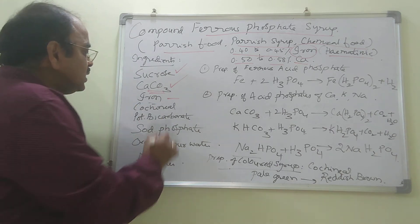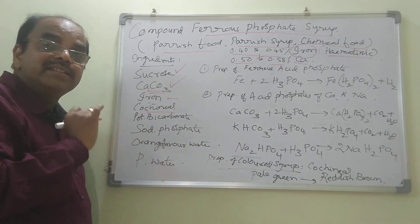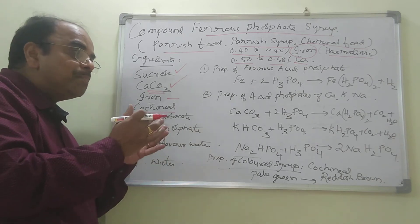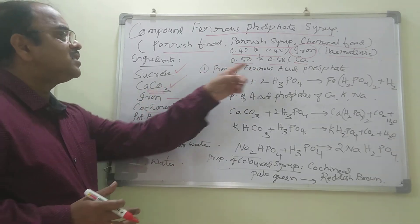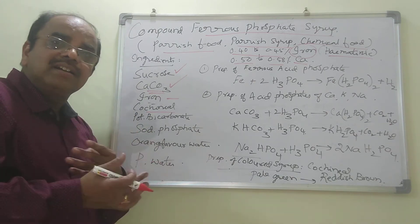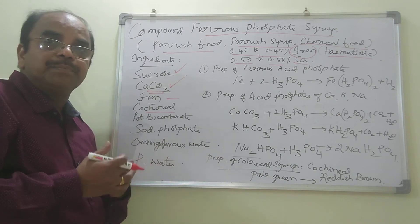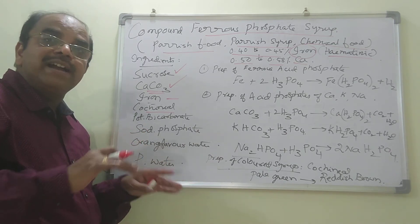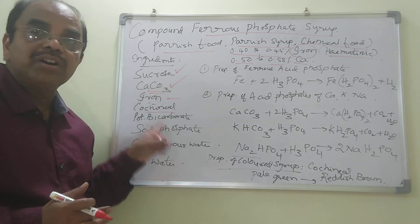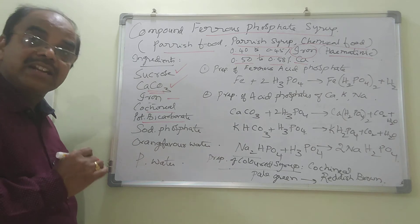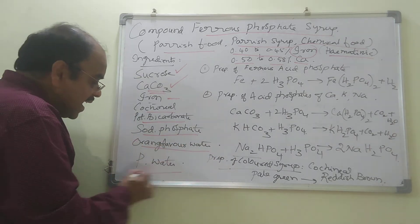This preparation is used for hematinic purposes — to increase iron levels in the body. We can use it as a calcium source also. This preparation contains 0.40 to 0.45% of iron and 0.50 to 0.58% of calcium. The ingredients include iron, cochineal as a coloring agent — used to mask the change of color in the preparation. There is a possibility for oxidation of ferrous to ferric forms causing color change. Other ingredients include potassium bicarbonate, calcium carbonate, sodium phosphate, orange flower water as the flavoring agent, and purified water.